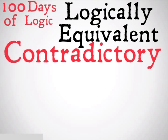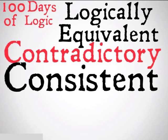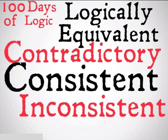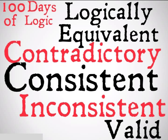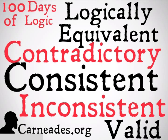That was logical equivalence. Next up is contradictory, followed by consistent, inconsistent, and finally valid. Watch a new video every single day for 100 days here at carneades.org. Stay skeptical, everybody.